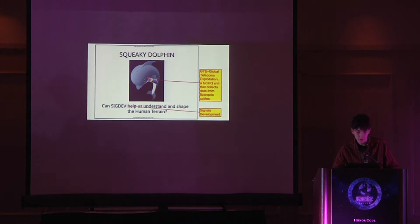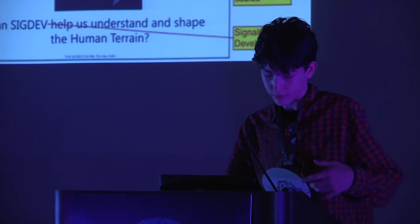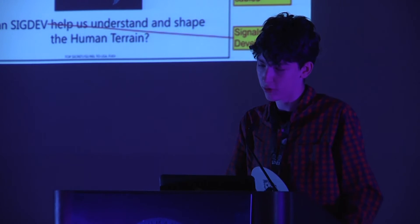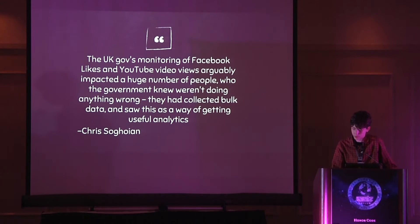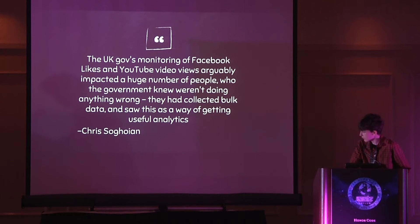One example of this happening is something done by GCHQ, which is a British intelligence agency, and that program was called Squeaky Dolphin. It was where the government recorded everything that users did to try to figure out who they were and what they did. To summarize, here's a quote: 'The UK government's monitoring of Facebook likes and YouTube video views arguably impacted a huge number of people who the government knew were doing nothing wrong. They collected bulk data and saw this as a way of getting useful analytics.'